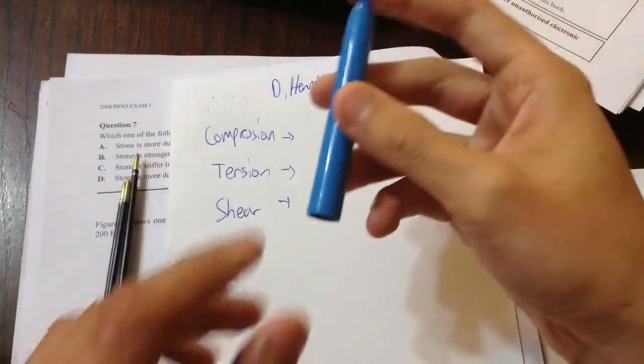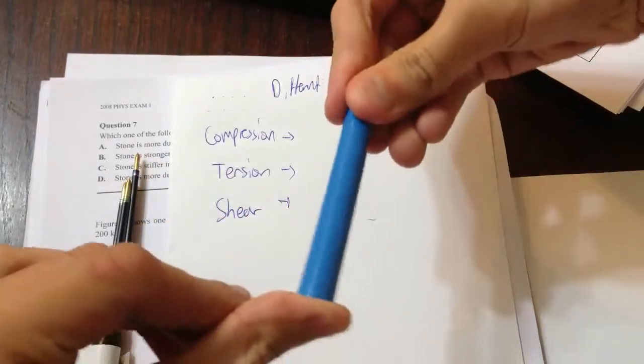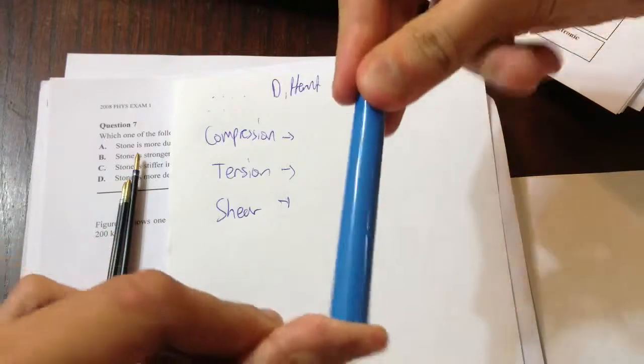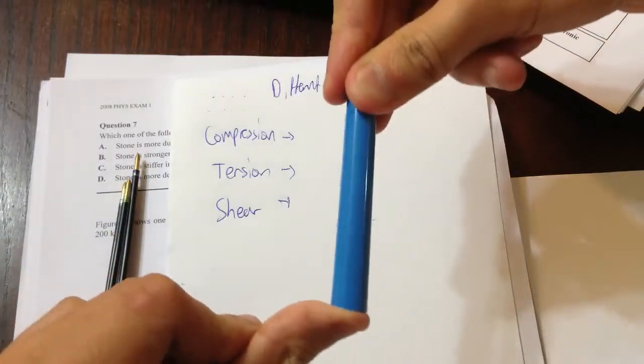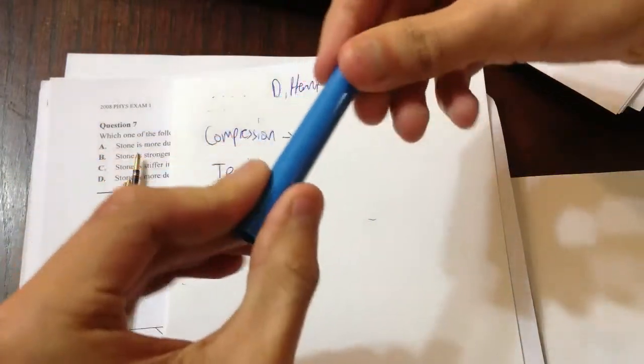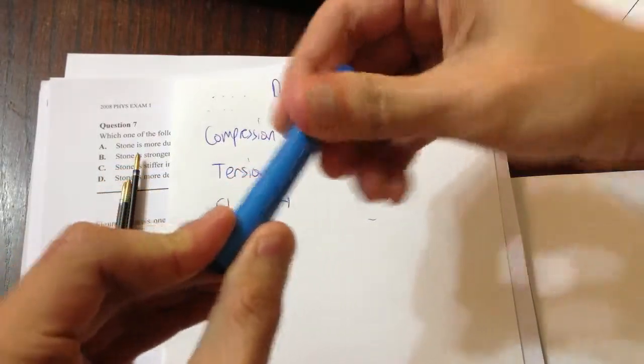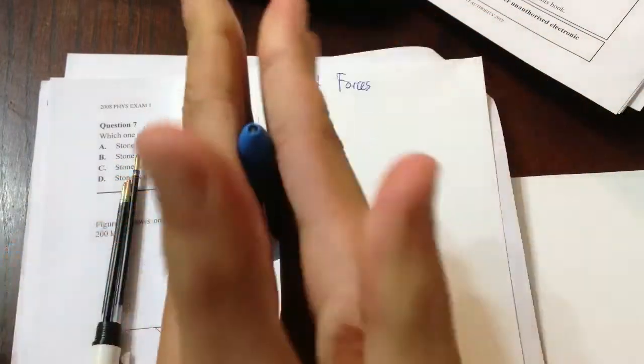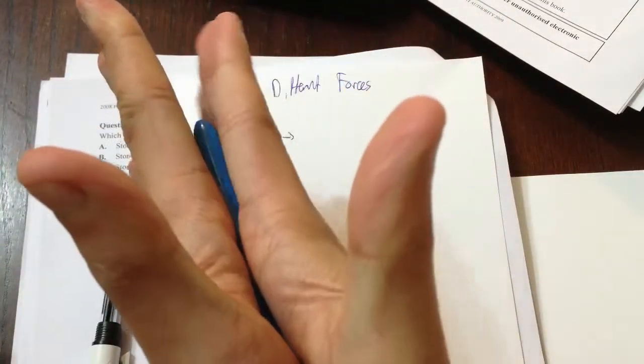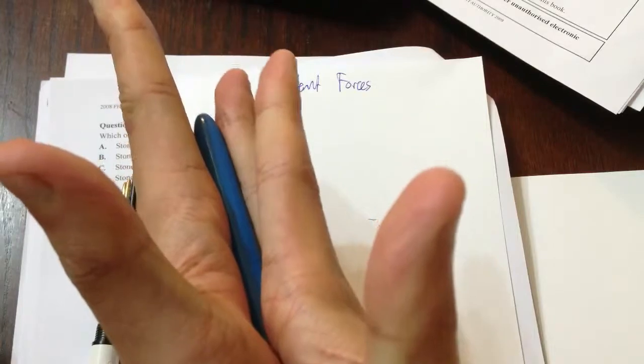So compression, it's not very hard. Compression is like you're pushing on both ends of something. So that's when it says under compression, this is what they mean. Tension is when you're pulling on both ends, and you're stretching it. And shear is when you're pushing one side down and pushing one side up. So it's not really compression or tension, but the layers are sliding over each other.